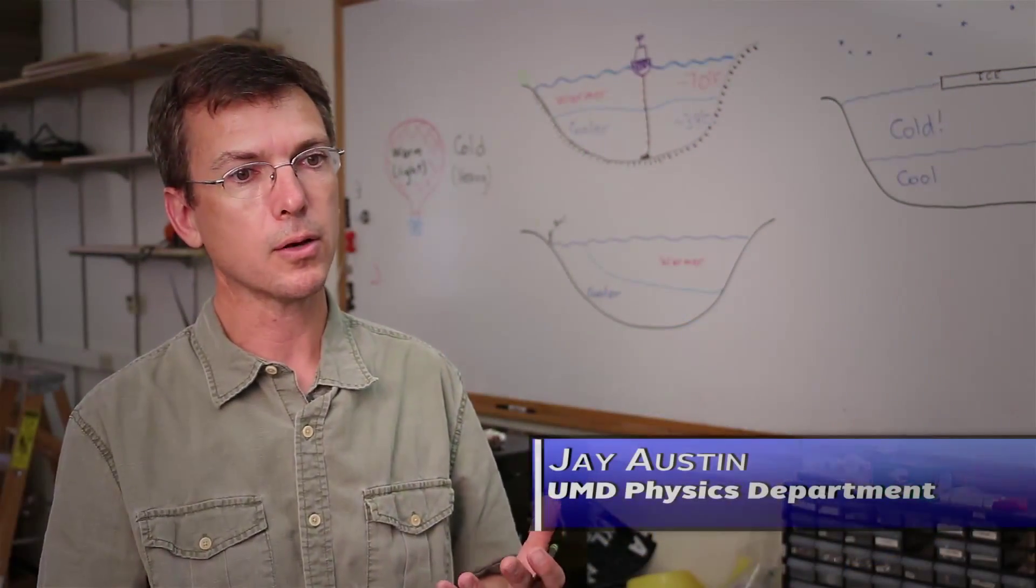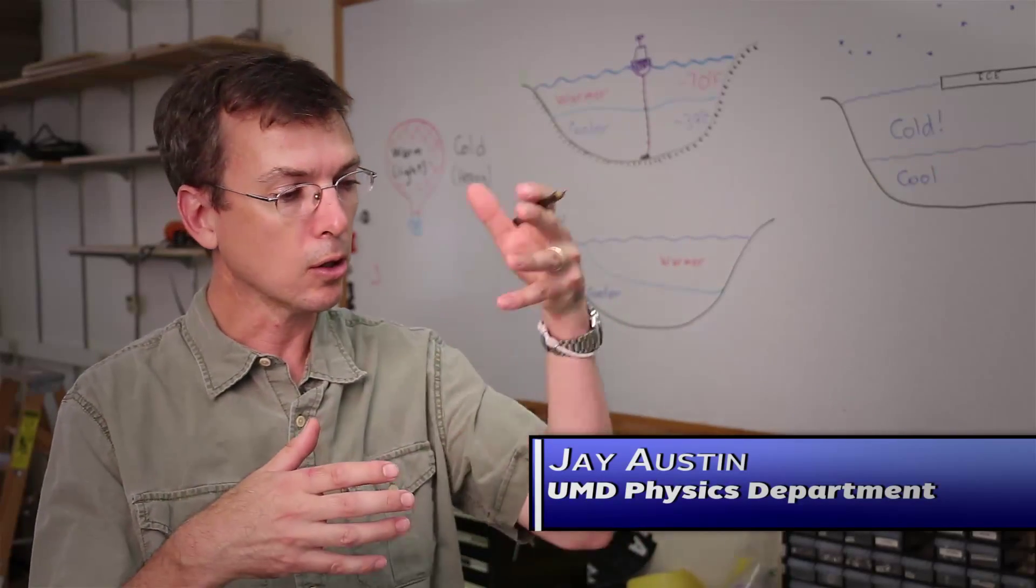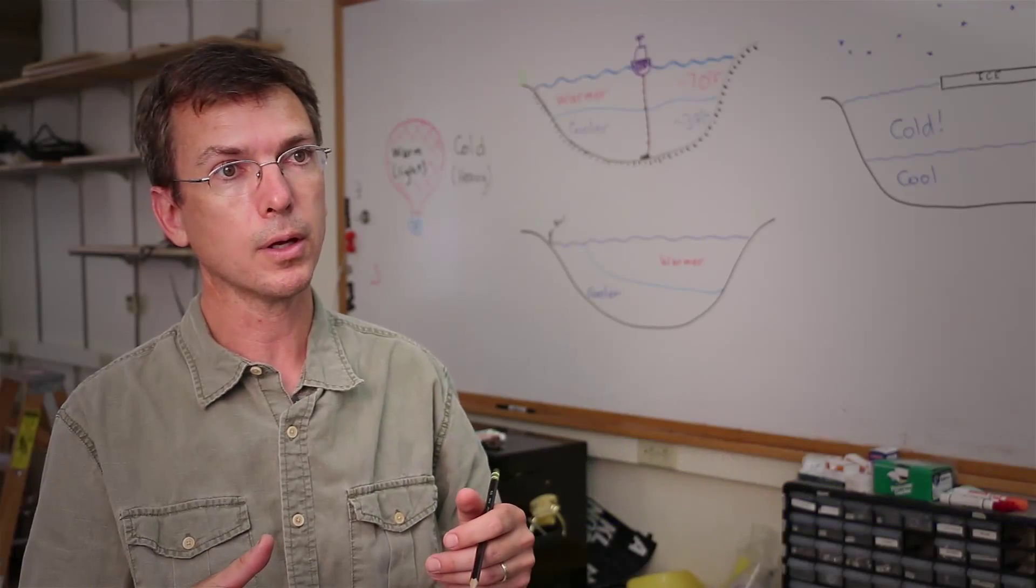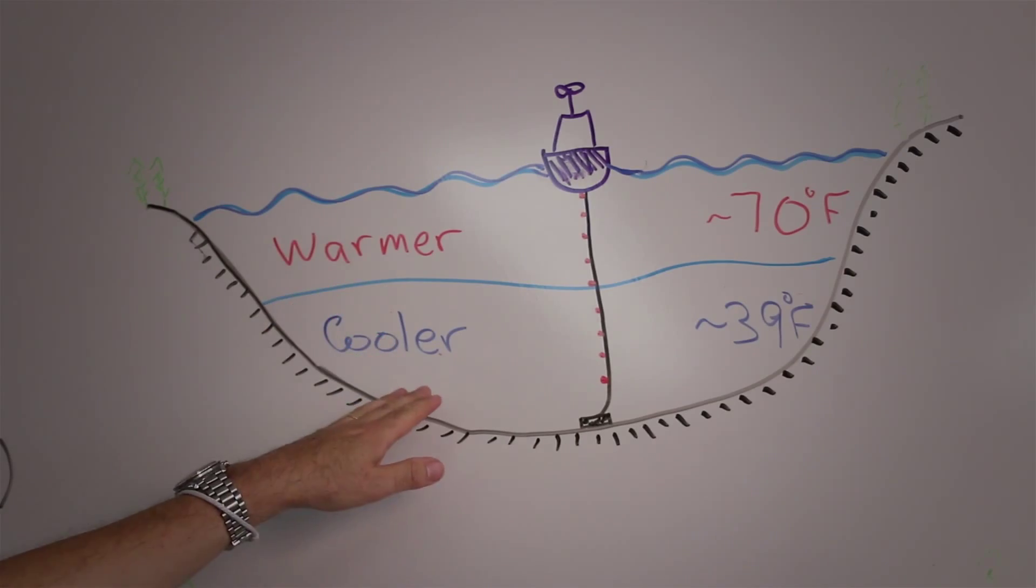In order to understand why lakes form layers of temperature, right now if we went out on the lake and lowered an instrument through the water column, we would find a layer of warmer water near the surface and much cooler water below.